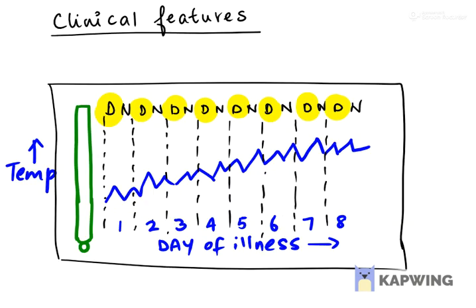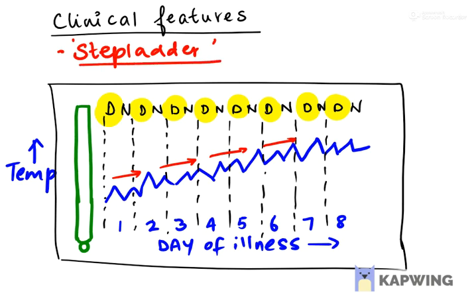Now coming to the clinical features — what I have given in the description is a very classical feature, which is the temperature recordings in a child with enteric fever. You can see on the first, second, and third days the temperature is increasing, with every subsequent day higher than the previous. The peak temperature obtained in subsequent days is higher compared to the previous day's temperature. This is what we characteristically call the step ladder pattern of fever in enteric fever. Make a note of this.